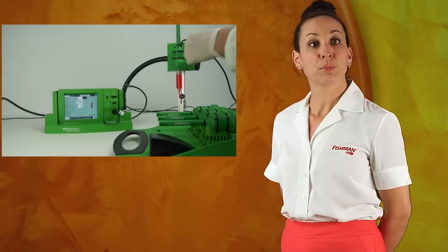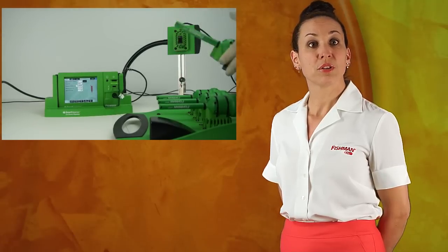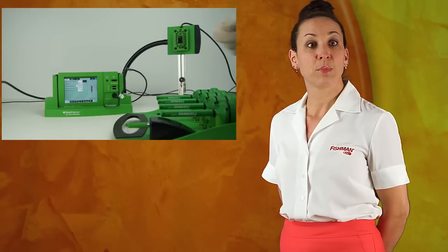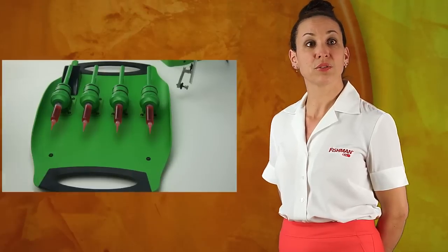When all guns are primed, remove the Smart Dispenser USB memory stick from the Smart Dispenser Priming Station and insert into the USB slot on the Smart Dispenser gun tray. Transport the gun tray to the automated assembly system for replacement of empty dispense guns.